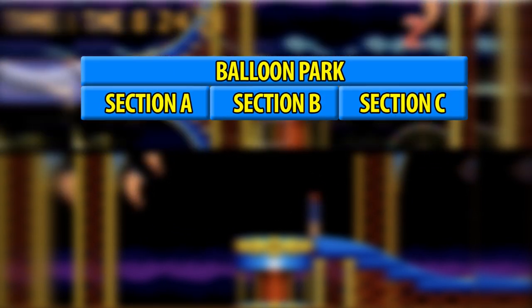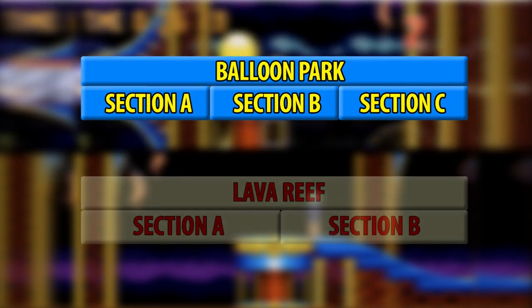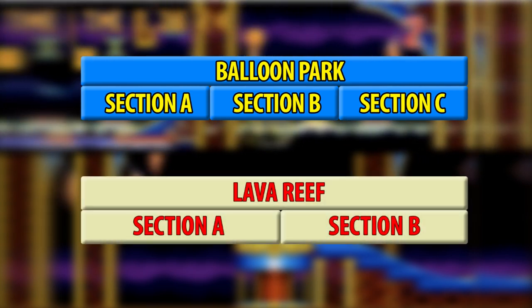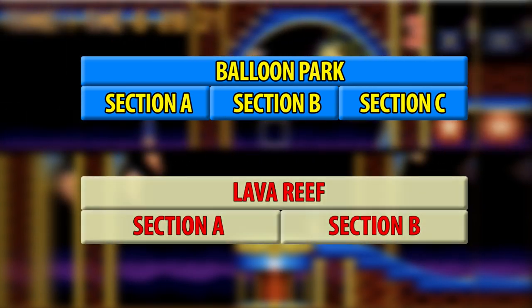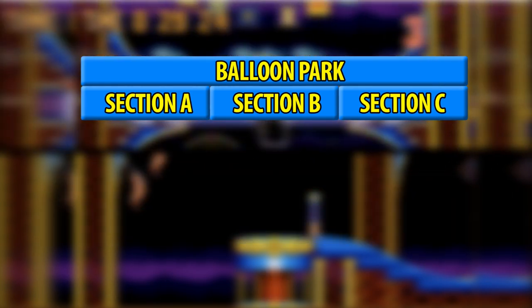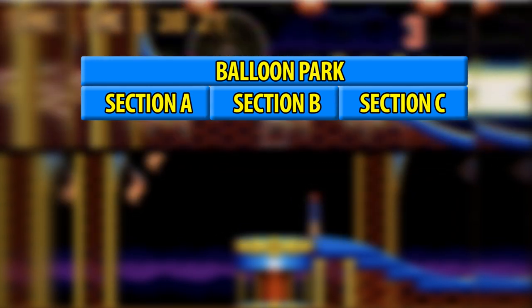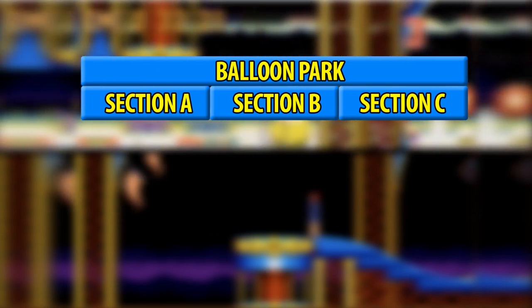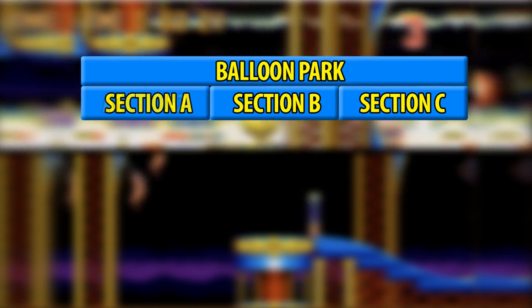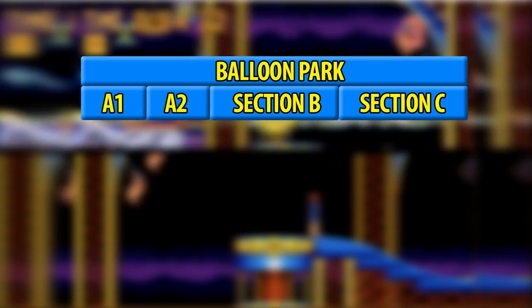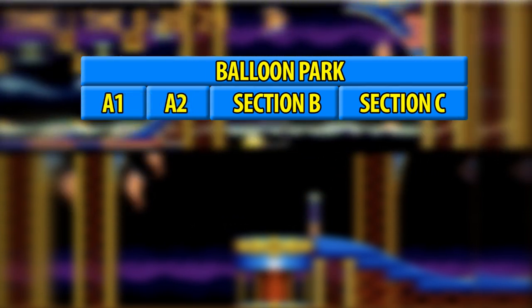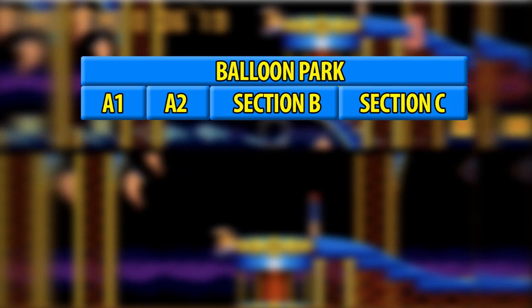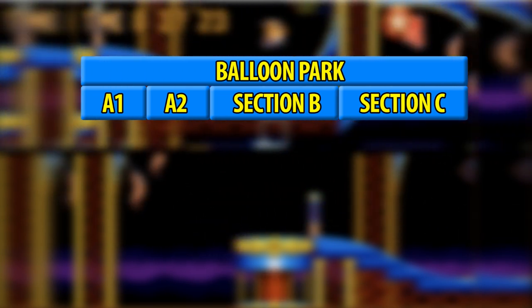A song in a pivotal level like Lava Reef only gets two sections. Not only does Balloon Park have three separate sections, but the first section itself has two distinct parts — A1 and A2. What distinguishes them?